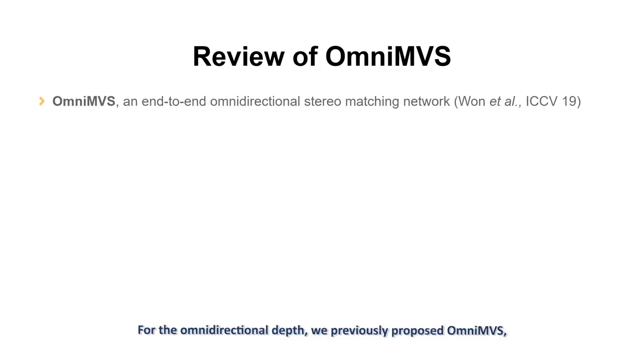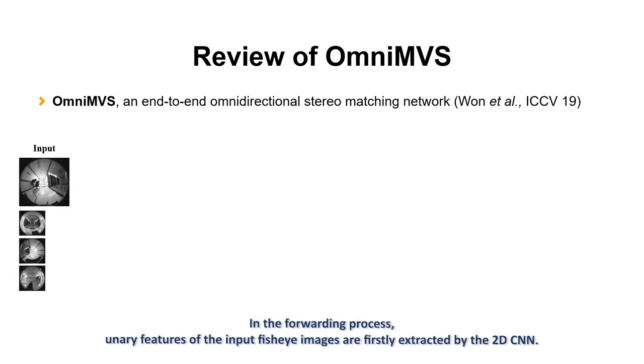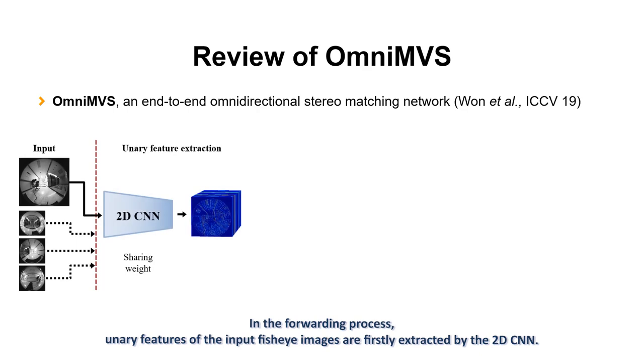For the omnidirectional depth, we previously proposed OmniMVS, a deep neural network for omnidirectional stereo matching. In the forwarding process, unary features of the input fisheye images are firstly extracted by the 2D CNN.